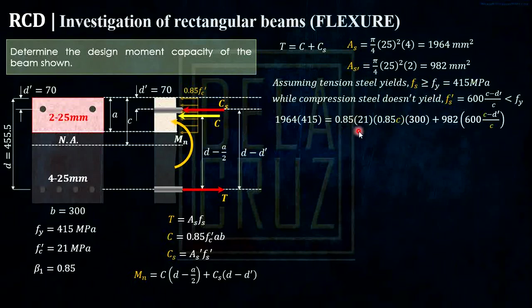Then the compression is 0.85 of FC prime. Then our A here, our A is beta 1C. So beta 1 is 0.85 because the FC prime is lesser than 28. Pinakita ko na ito. So beta 1C, then your B is 300, plus AS prime. AS prime is 982 times FS prime. So we assume it doesn't exceed FY. Kaya ito yung ginamit natin.